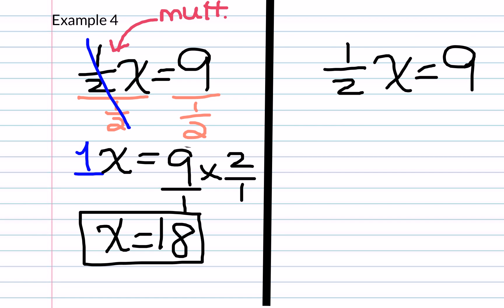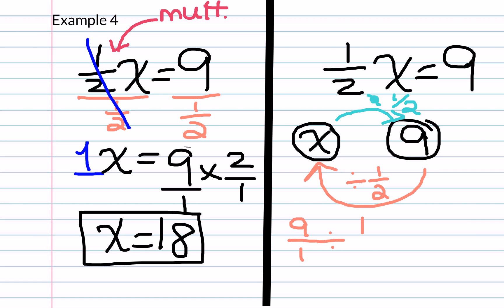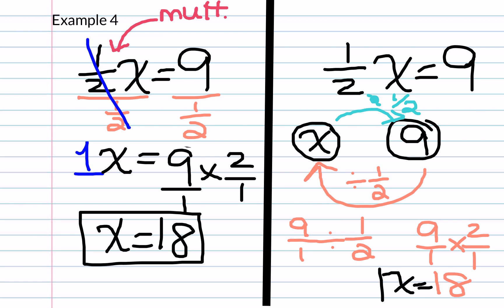For the mapping, we start with our variable, followed by our solution, and ask what is happening to x to get to our solution. In this case, we are multiplying by 1 half. The inverse operation is to divide by 1 half. Once more, 9 over 1 divided by 1 half is the same as 9 over 1 times 2 over 1. We can see that 9 times 2 is 18, therefore x is equal to 18.